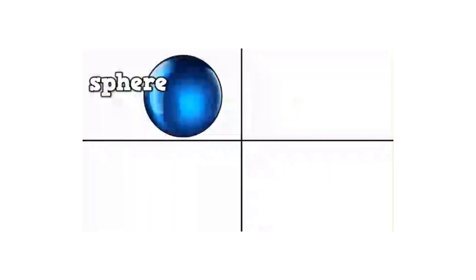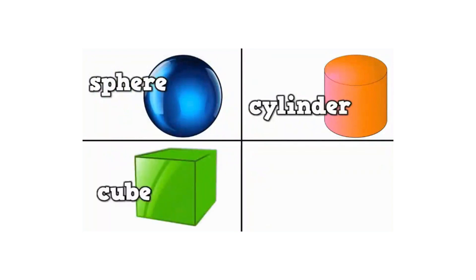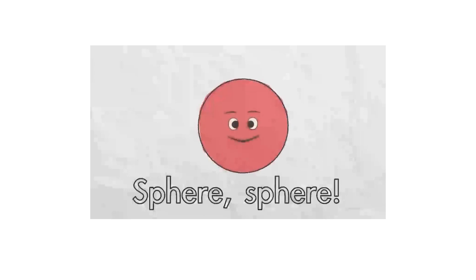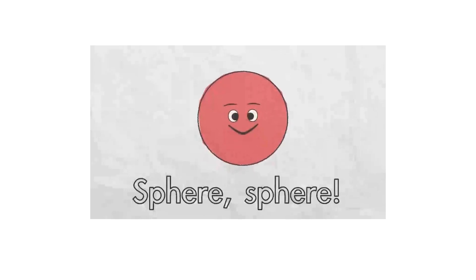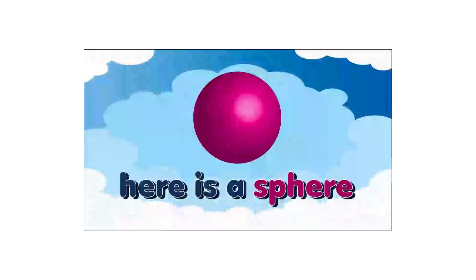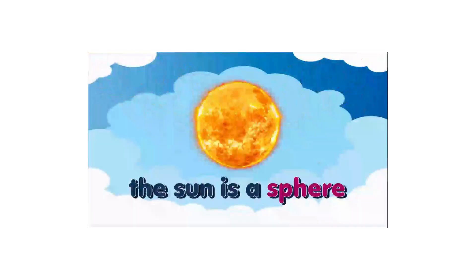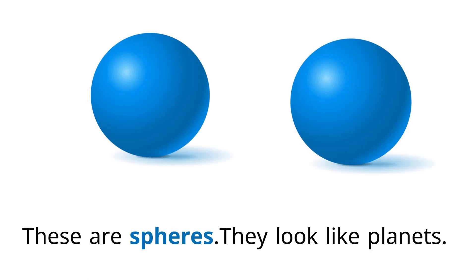A sphere, a cylinder, a cube, and a cone. Sphere. Here is a sphere, it has this shape. The sun is a sphere. These are spheres. They look like planets.